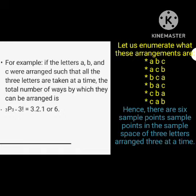So let us enumerate those arrangements. The first arrangement is A, B, C. Then A, C, B. Then B, C, A. Then B, A, C. Then C, B, A. And C, A, B. So as you notice, there are 6 sample points in the sample space when 3 letters are arranged 3 at a time.